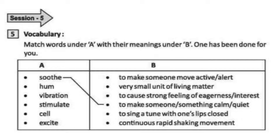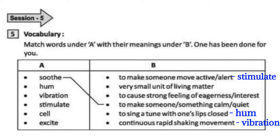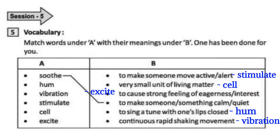Session 5 — Vocabulary. Match words under column E with their meanings under column V. One has been done for you. Soothe: to make someone or something calm. Hum: to sing a tune with one's lips closed. Vibration: continuous rapid shaking movement. Stimulate: to make someone more active or alert. Cell: very small unit of living matter. Excite: to cause strong feelings of eagerness or interest.